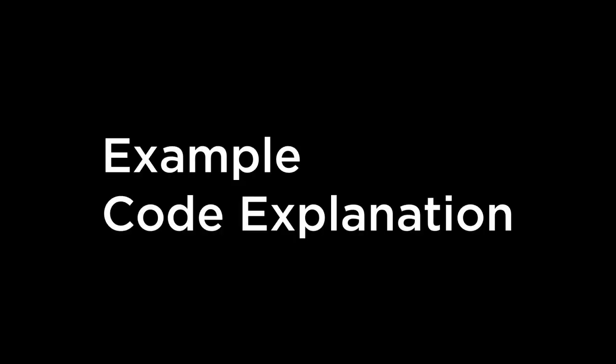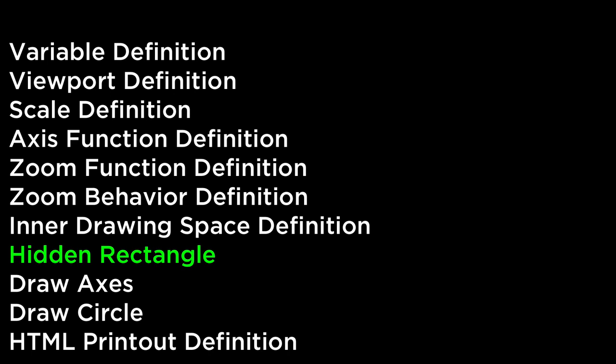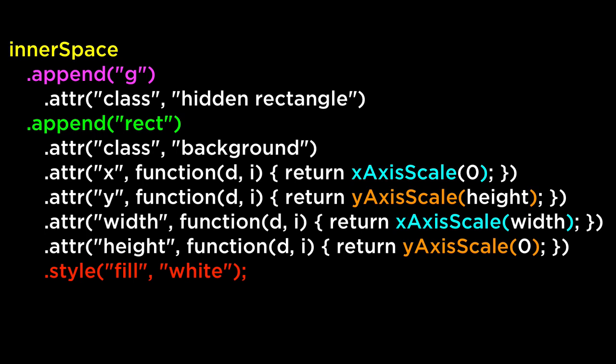Example code explanation. If we break down the full source code of the example in two sections, you can see where the drawing of the visual element starts. We add the hidden rectangle as soon as we have the inner drawing space defined. This ensures that everything drawn after this point will be newer so that it will be on top of the hidden rectangle. Because we call the zoom behavior on the inner drawing space and the hidden rectangle is a child element of the inner drawing space, it will have the zoom behavior available to it. This is the code of the rectangle — it is a regular SVG rectangle. I like to add it to its own SVG group element to keep the code clean and understandable. For SVG rectangles we have to define the x, y, width, and height.